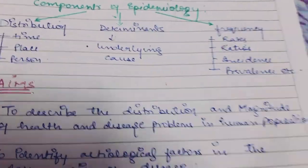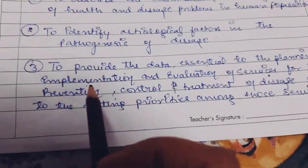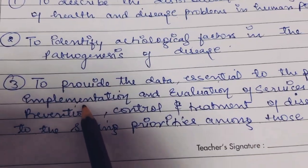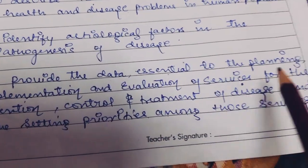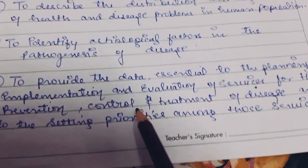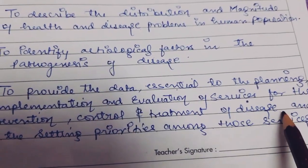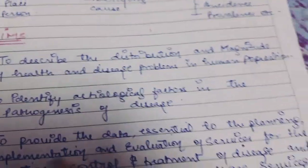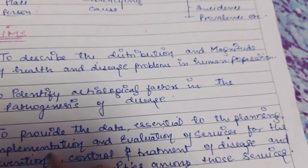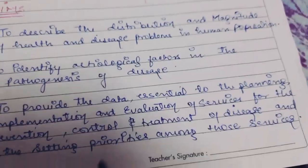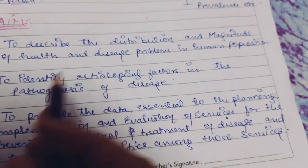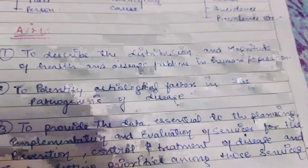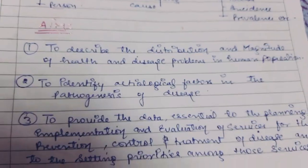The third aim is to provide the data essential to the planning, implementation, and evaluation of services for the prevention, control, and treatment of the disease, and to the setting of priorities among those services. We have to treat, prevent, and control disease, and for that we'll be needing data for health planning. So these are our aims.